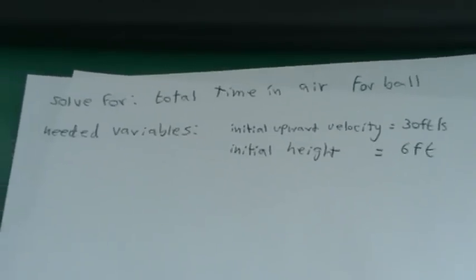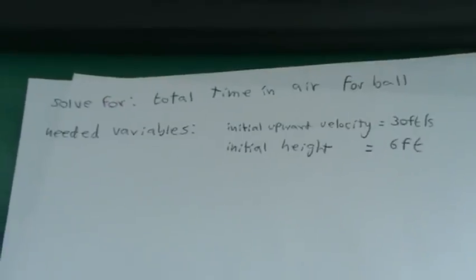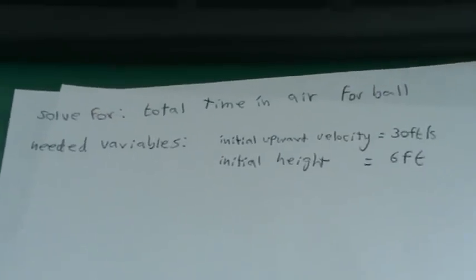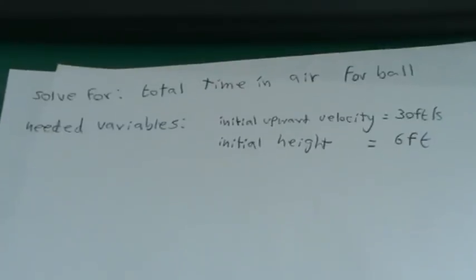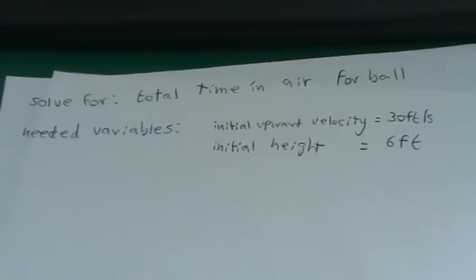For this problem, you're solving for the total time that the ball is in the air. The variables that you need are the initial upward velocity and the initial height, which are 30 feet per second and 6 feet.